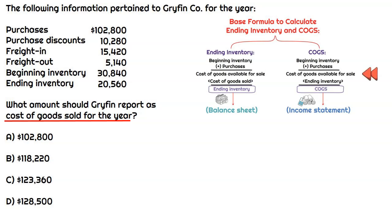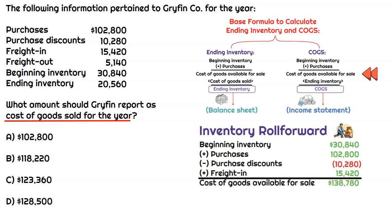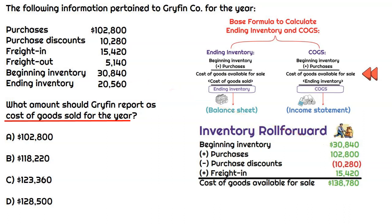Let's go ahead and execute this. We start with beginning inventory, which the question tells us is $30,840, and then we'll add purchases. Purchases total $102,800, but there's also purchase discounts of $10,280. So our net purchases — we would have to subtract the purchase discounts, so that's negative $10,280.